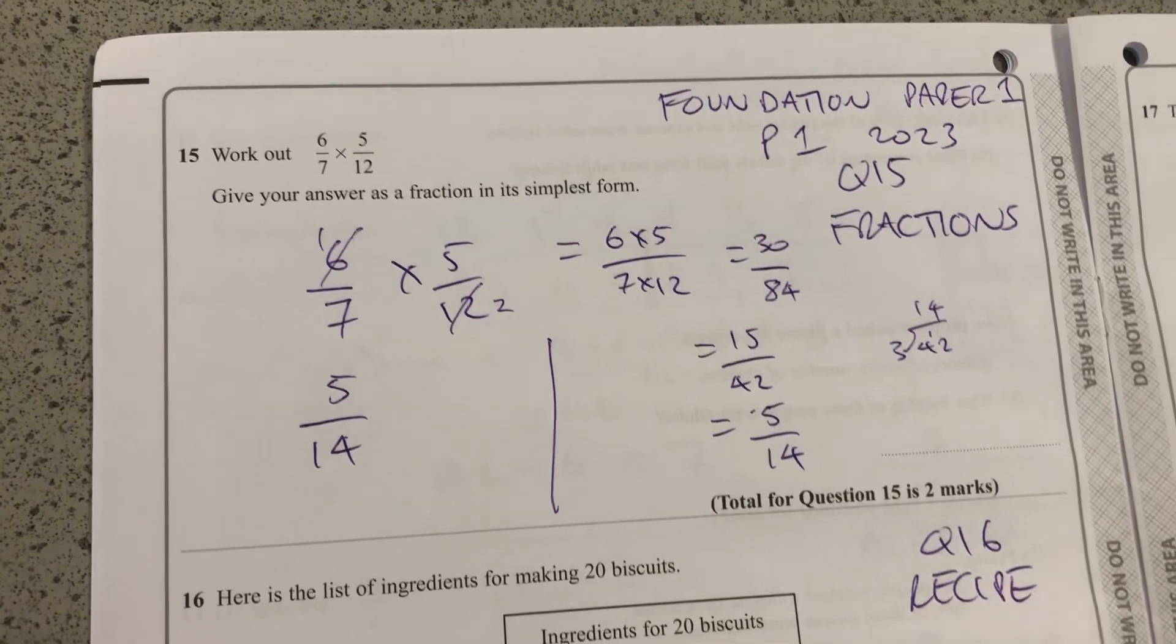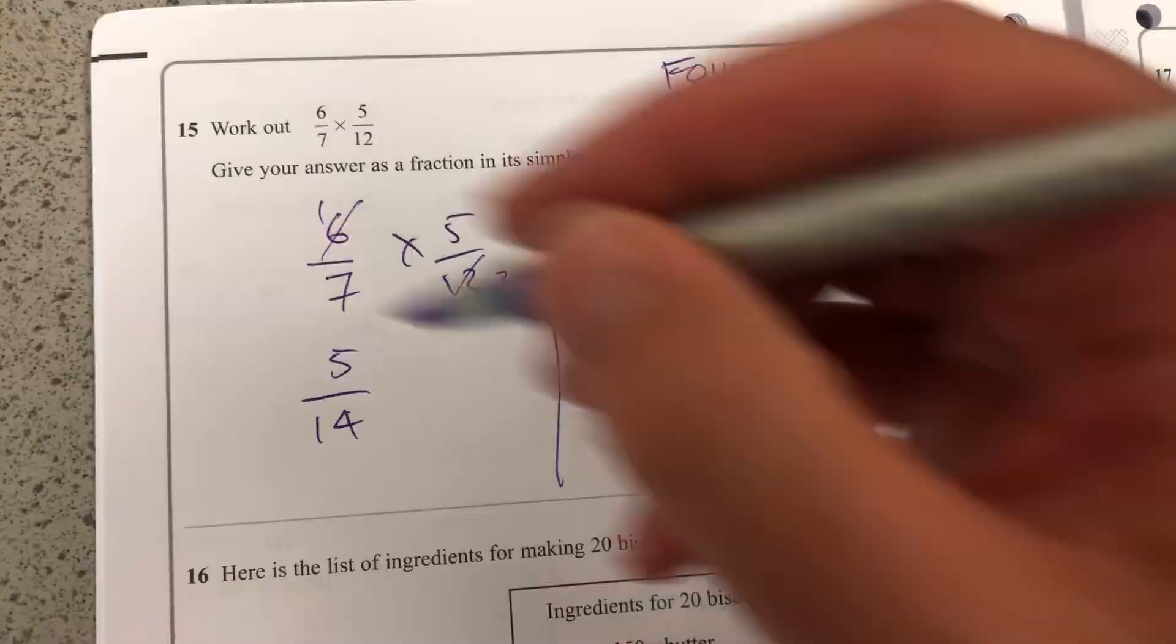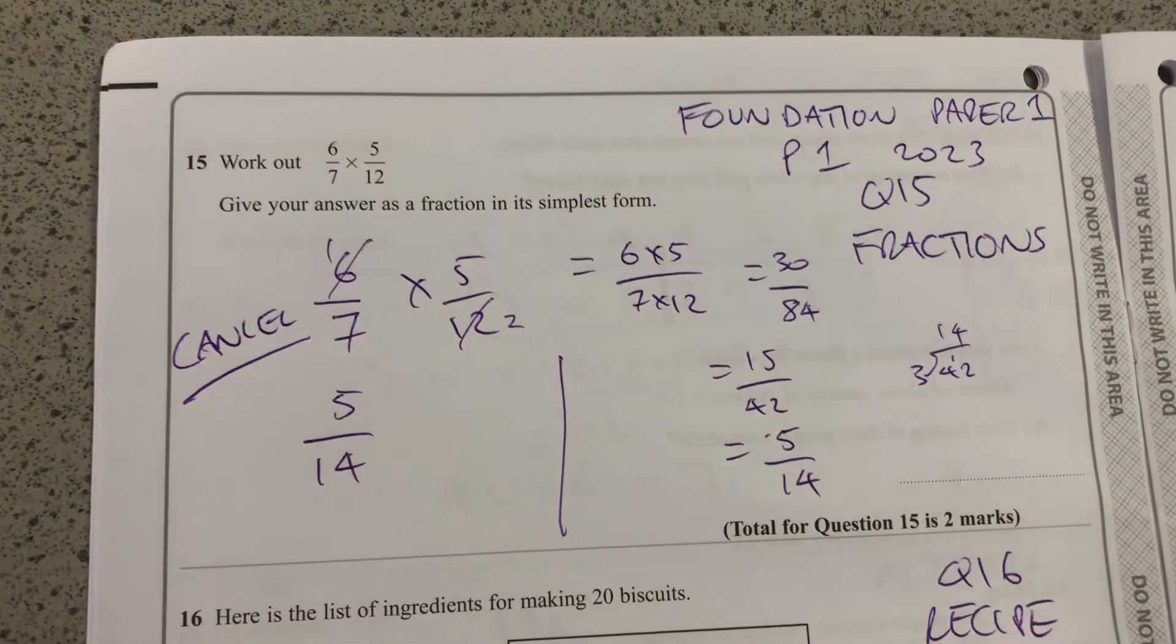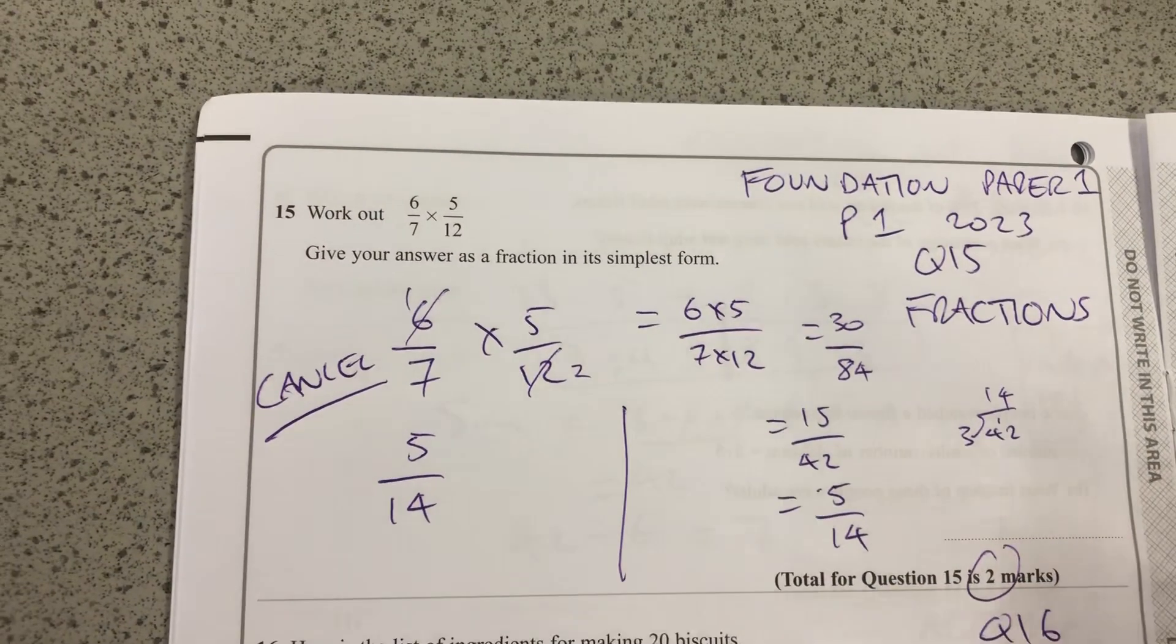Both methods are absolutely fine, but I always find that cancelling, keeping the numbers small, makes it much easier. It's worth 2 marks. Either way works fine.